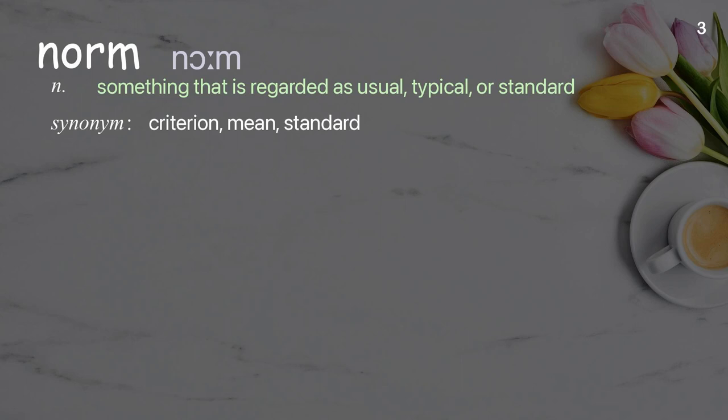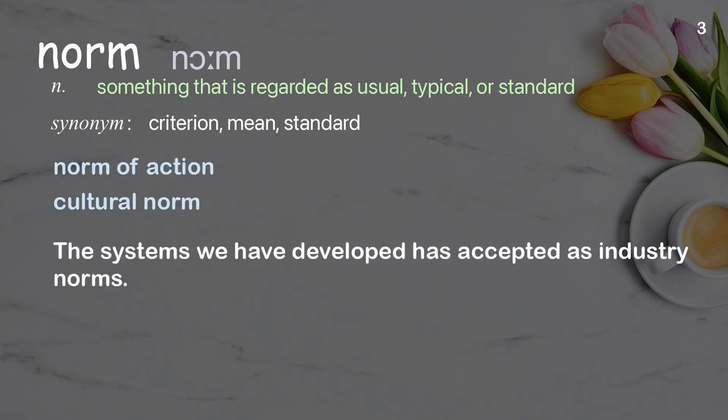Norm: something that is regarded as usual, typical, or standard. Examples: norm of action, cultural norm. The systems we have developed have been accepted as industry norms.